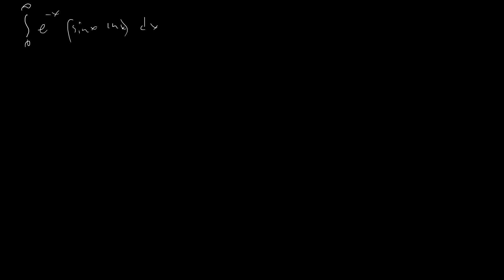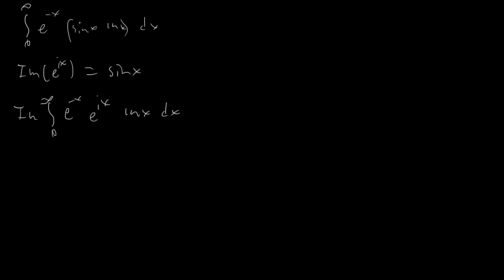The way we're going to do that is: we know that the imaginary part of e to the ix equals sine of x. So basically what we're going to do is take the imaginary part of this whole integral, using e to the negative x times e to the ix times ln x dx. Then we combine those exponents and end up with the integral of e to the negative (1 minus i)x times ln x dx.